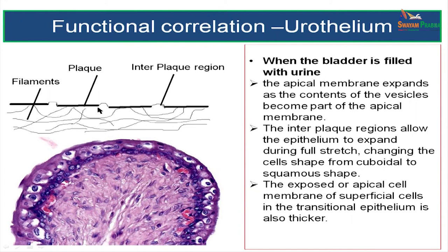When the bladder is filled with urine, this apical plasma membrane is going to expand and these stacks or piles of plasma membrane become part of the apical membrane. This interplaque region allows the epithelium to expand to full stretch, changing the cell shape from cuboidal to squamous. When empty, the plasma membrane is kept folded with the interplaque region acting as a hinge.